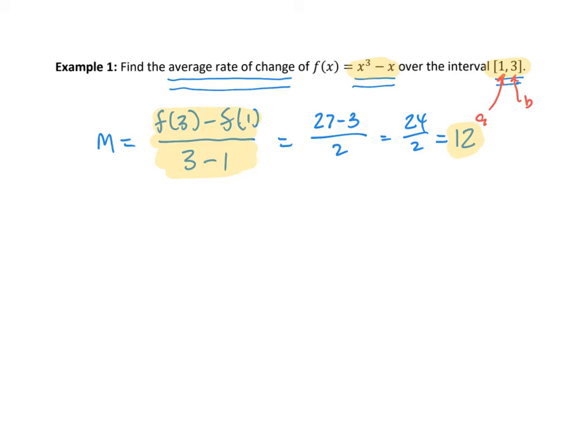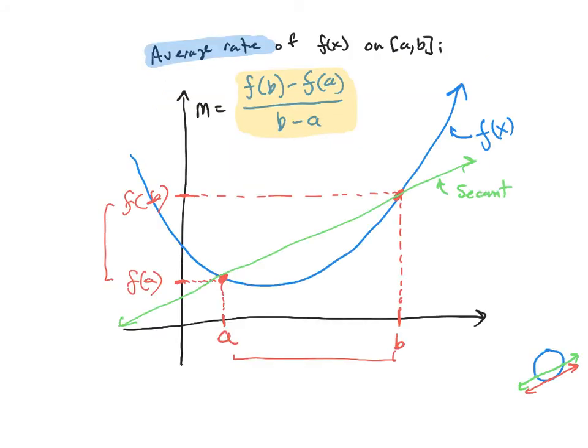Now we're going to go back to our picture and introduce a new idea. I want to shift gears and stop talking about average rate of change and start talking about instantaneous rate of change — meaning, what would be the slope of the curve at just one point? We won't be able to use our usual slope formula because you need two points to do that. We're going to have to focus on this one point.